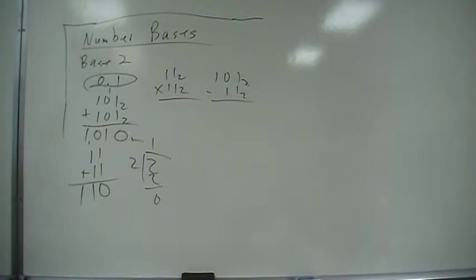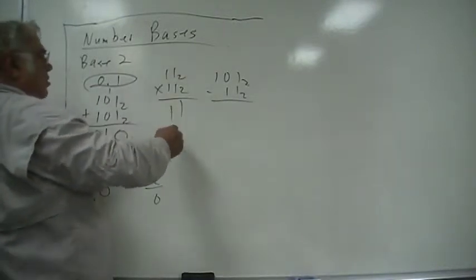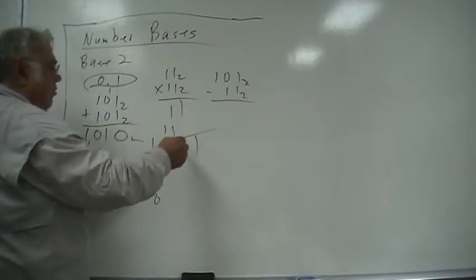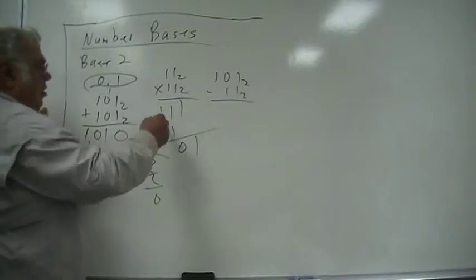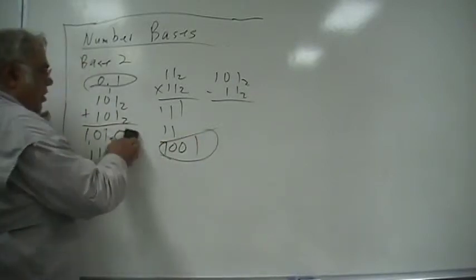And then multiplying, eleven base two times eleven base two. One times one is one, one times one is one, same thing here. And then this comes down, that is the remainder when you divide by two of zero, carry one, same thing here, so this would work out to be this in base two.